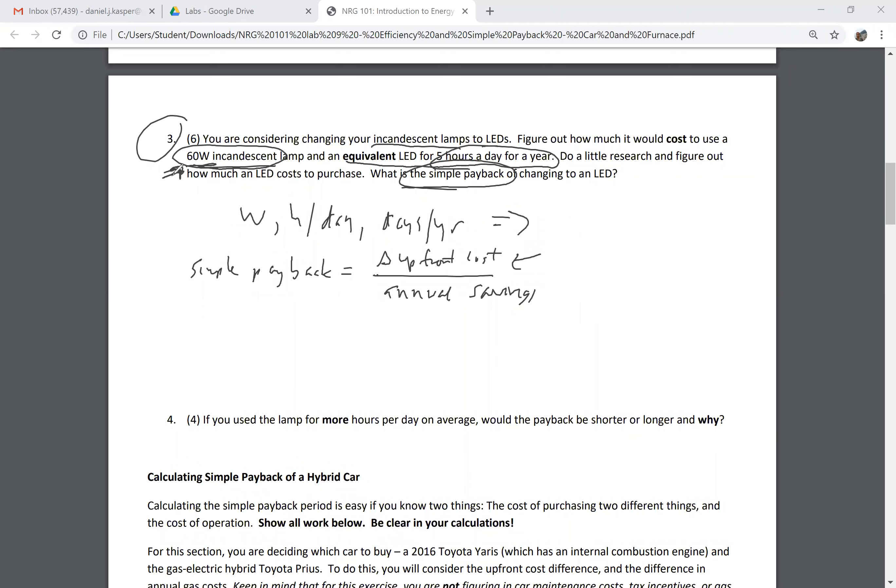I already have this, so my choice is do I keep that and just keep using my 60 watt lamp, or do I change to the LED? So my choice is keep incandescent or change to LED. This is choice number one and this is choice number two.